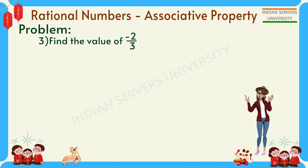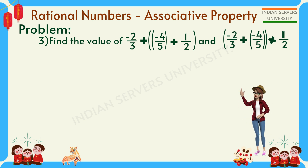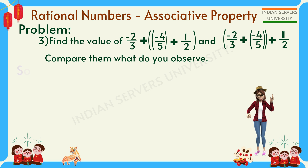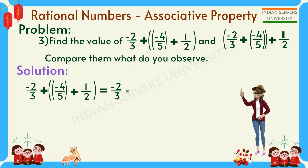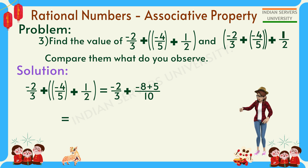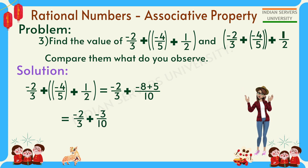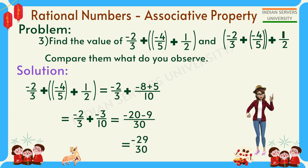Find the value of ((-2/3 + (-4/5)) + 1/2) and (-2/3 + ((-4/5) + 1/2)) and compare them. For the first expression, solve the bracket: 2 × (-4) = -8, 5 × 1 = 5, denominator 5 × 2 = 10. So -2/3 + (-3/10). Cross multiplication: 10 × (-2) = -20, 3 × (-3) = -9, denominator 10 × 3 = 30. This gives -29/30.